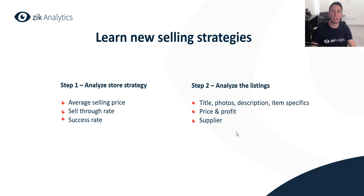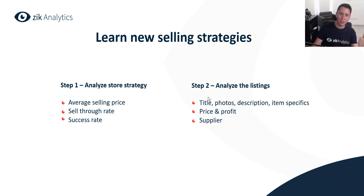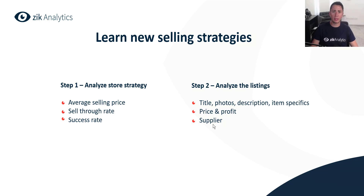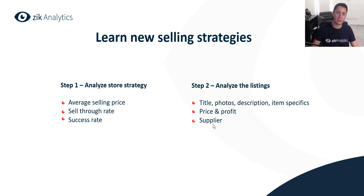Step two is to analyze your competitor's listings. Part of the strategy is not only in the store but also in the listings themselves — how he does his title, photos, description, item specifics, what his price and profit are, and what supplier he uses. I'll now share my screen and show you an example of an interesting seller with an interesting strategy.